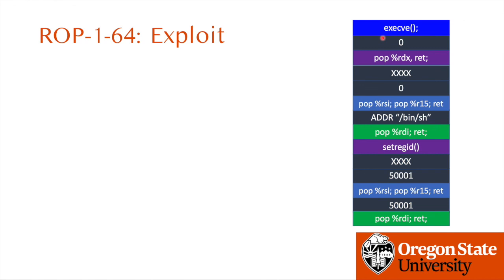The final exploit for ROP1 64-bit will look like: the stack starts with pop RDI, return to set 50001 as the first argument; then pop RSI, pop R15, return for RSI 50001; then return to setregid to call setregid(50001, 50001). Then return to pop RDI, return to set the address of /bin/sh as the first argument; set RSI to zero, ignore R15; set RDX to zero; then call execve with those three arguments.